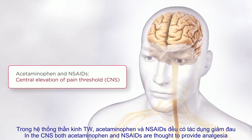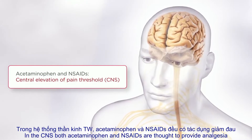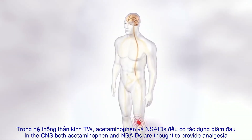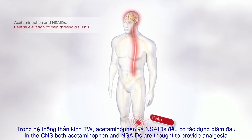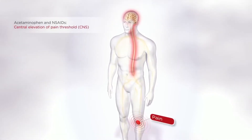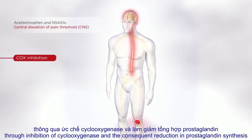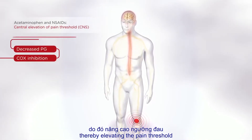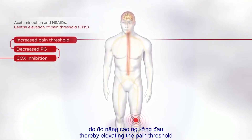In the central nervous system, both acetaminophen and nonsteroidal anti-inflammatory drugs, or NSAIDs, are thought to provide analgesia through inhibition of cyclooxygenase and the consequent reduction in prostaglandin synthesis, thereby elevating the pain threshold.